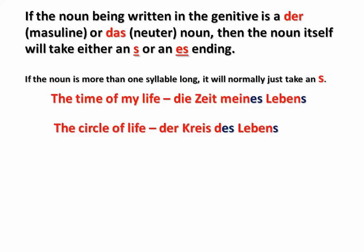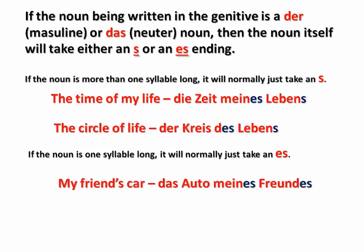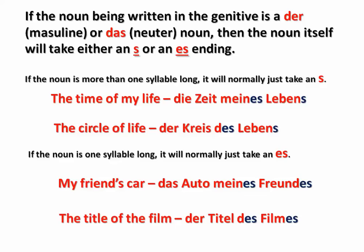Another example: 'der Kreis des Lebens.' However, if the noun is just one syllable long, then it will normally take an ES — and again, this is only for masculine or neuter nouns. For example, 'my friend's car' — 'das Auto meines Freundes.' 'Freund' is one syllable long, so it adds ES. Or 'der Titel des Filmes' — 'Film,' masculine noun, one syllable long, adding an ES.